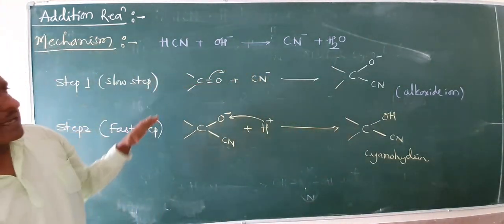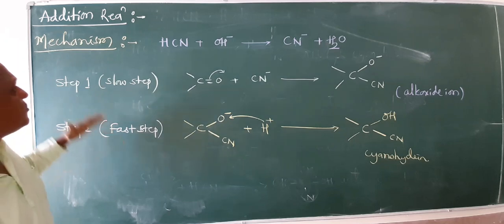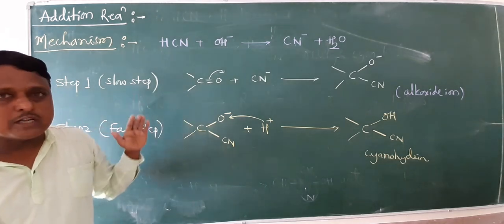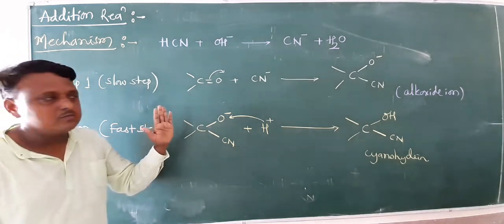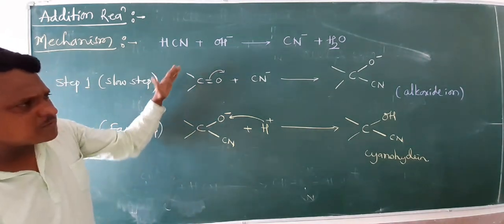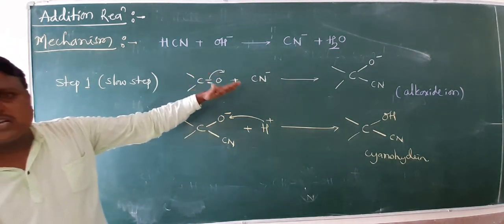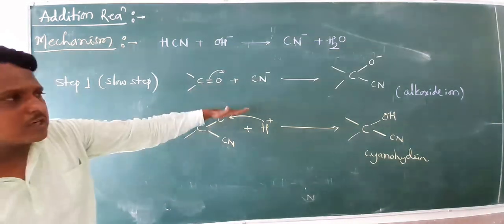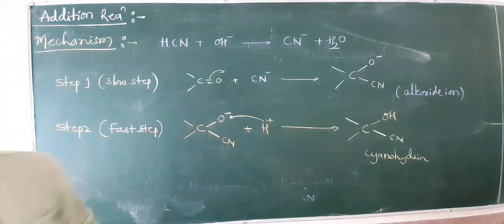This is a simple mechanism. When either aldehyde or ketone undergoes addition with hydrogen cyanide, in the first step an alkoxide ion forms, and in the second step the cyanohydrin is produced. We will continue this mechanism once more with a corresponding example in the next video. Thank you.